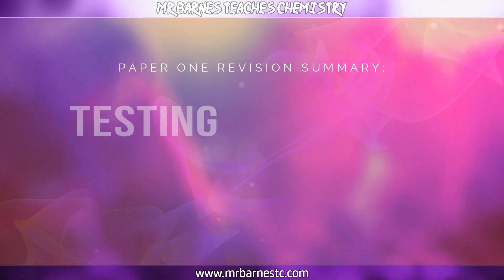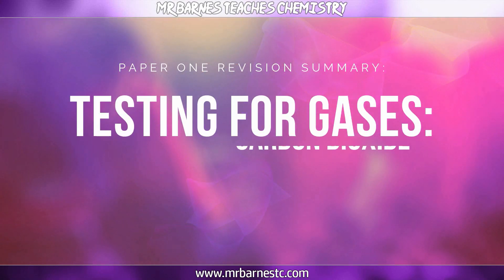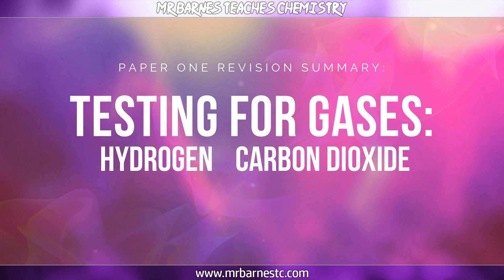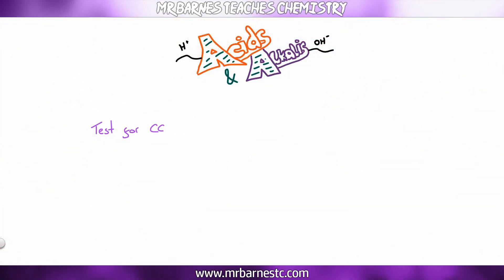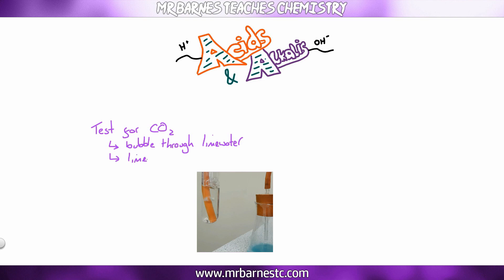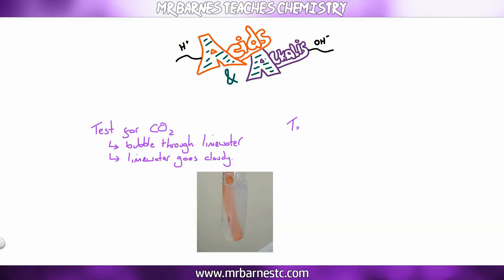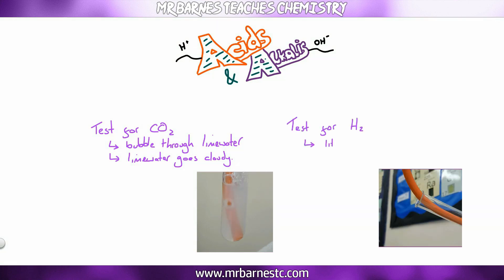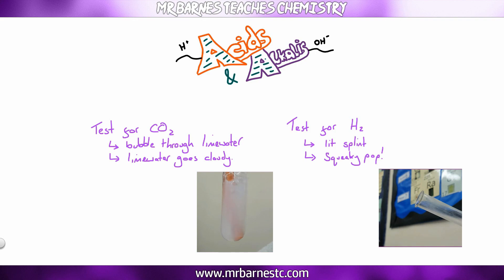The final section covers the tests for two gases from this topic: carbon dioxide and hydrogen. For carbon dioxide, bubble the gas through limewater — if CO2 is present, the limewater will go cloudy. For hydrogen, hold a lit splint to the gas — if hydrogen is present, you get a squeaky pop. And that brings this revision summary video to an end.